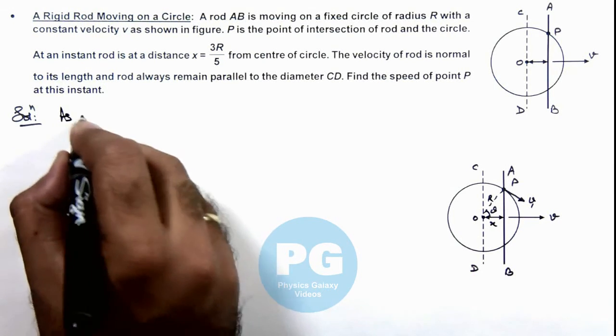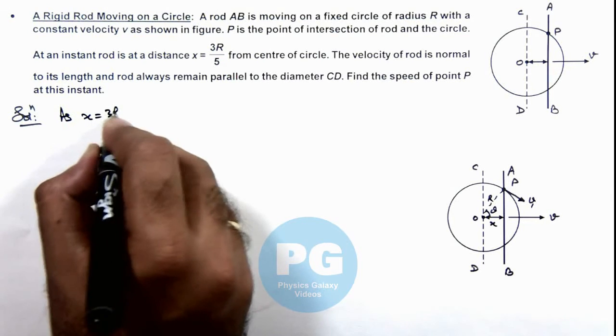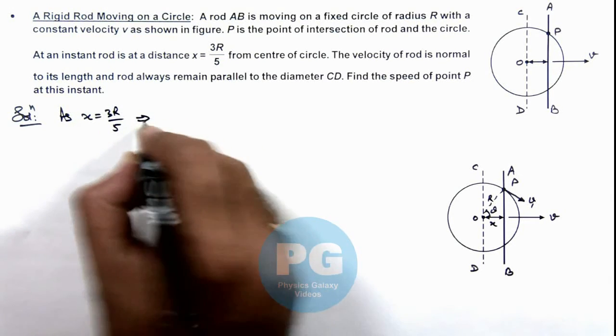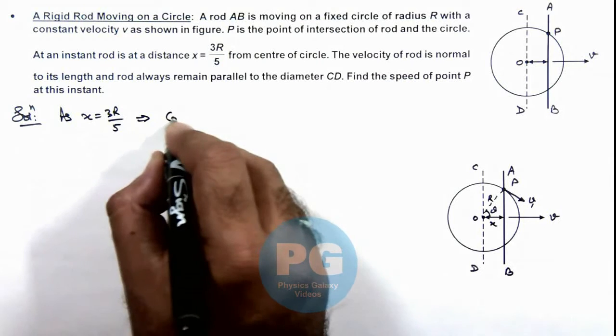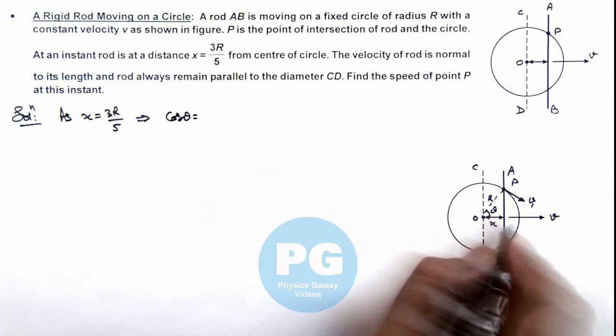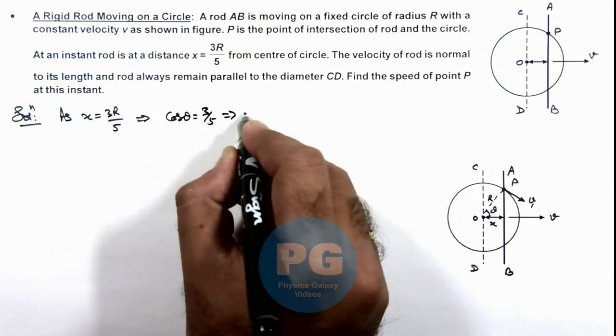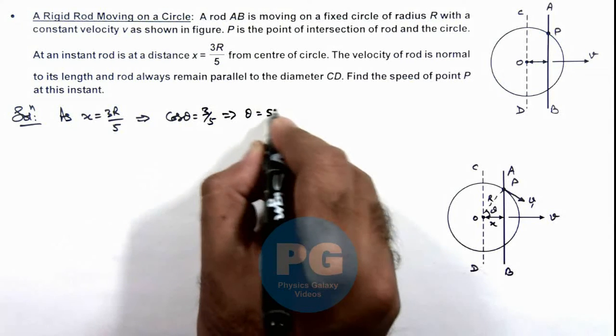As x is equal to 3R by 5, this implies we can write cos theta is equal to x by R which is 3 by 5. This implies the value of theta is 53 degrees.